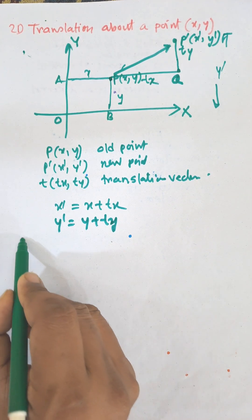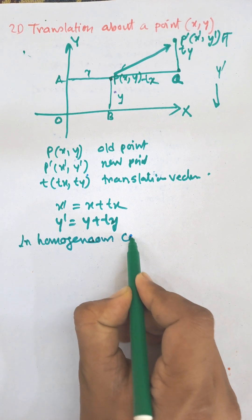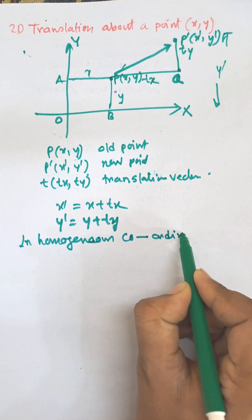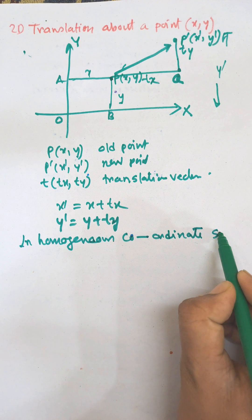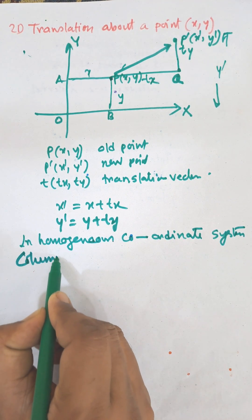Now in homogeneous coordinate system, there are row matrix presentation and column matrix presentation. First of all I am writing column matrix presentation.